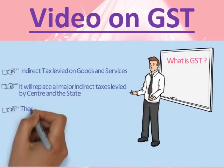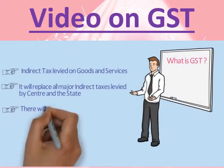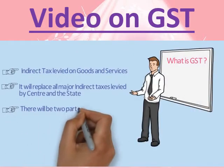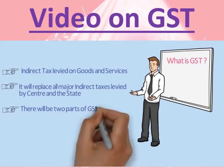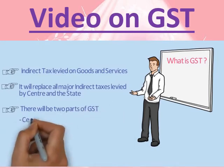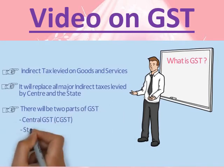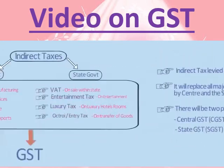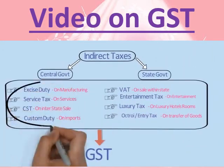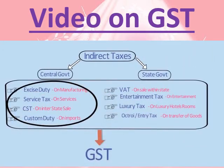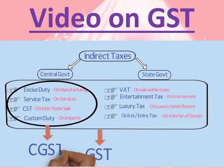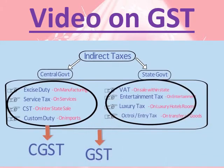GST will be a game changer because it will replace the major indirect taxes levied by center and state — taxes such as excise duty, service tax, VAT, luxury tax, and entertainment tax will all be replaced by Goods and Services Tax. There will be two parts of GST: first is Central GST (CGST), and second is State GST (SGST). All central level indirect taxes except custom duty will be replaced by CGST, and state level indirect taxes will be replaced by SGST.